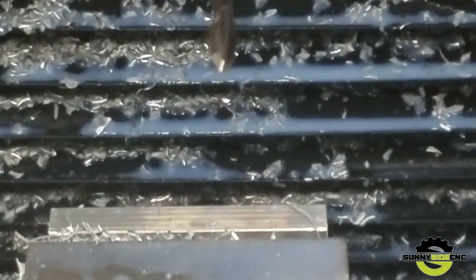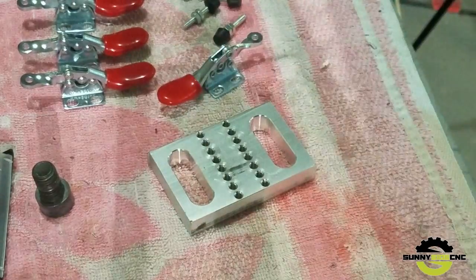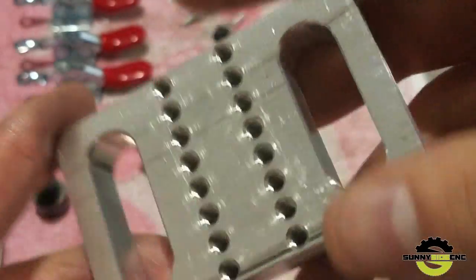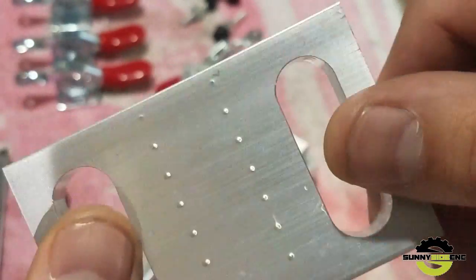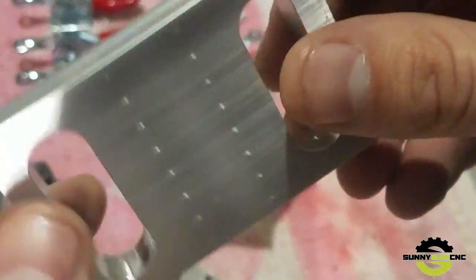That's the same tool that we used to spot drill our holes. So what we did today, we did some spot drilling, drilling, tapping on a Tormach. These are blind holes. We got some dimples on the other side but that's okay.